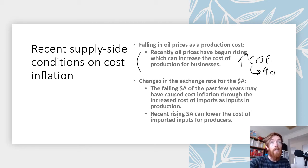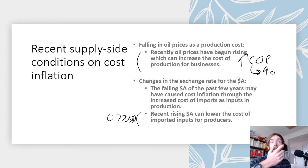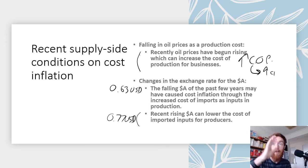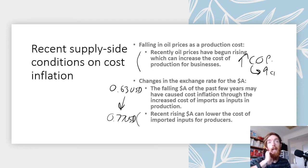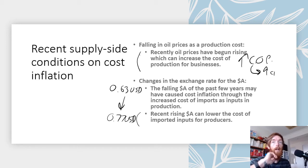Regarding the exchange rate: recently the Australian dollar has been increasing — it's at around 77 US cents as of recording. That can decrease the cost of imported inputs for producers. It was around 63 US cents at some points at the end of 2019 and early 2020, so it has increased significantly, meaning imported inputs are cheaper, which can lower cost inflation overall by lowering the cost of production for businesses.